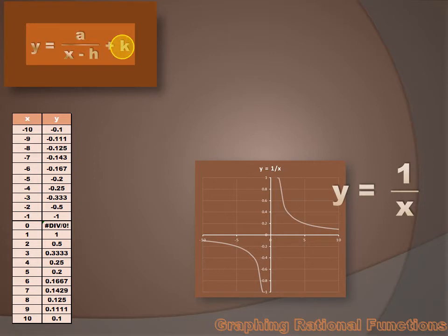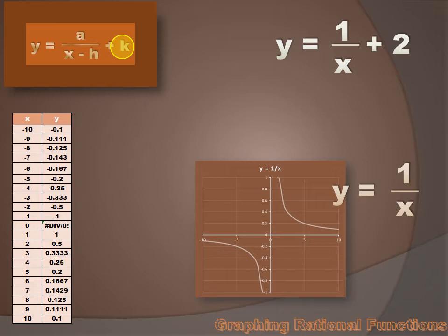Let's look at the k value. In the parent function, the k value is 0. But what if the k value was 2? What if the equation was y equals 1 over x plus 2? How would that change the graph?